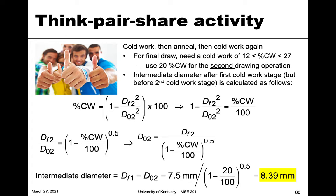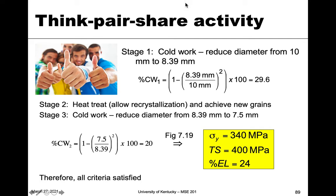So the two-stage plan is: Stage 1 — cold work the rod from 10 mm down to 8.39 mm. Then heat treat to allow recrystallization, resetting to zero percent cold work. Stage 2 — cold work from 8.39 mm down to 7.5 mm, which is 20 percent cold work. Reading from the graphs, that gives a tensile strength of about 400 megapascals (above 380) and ductility of about 24 percent (above 15). All criteria are met.